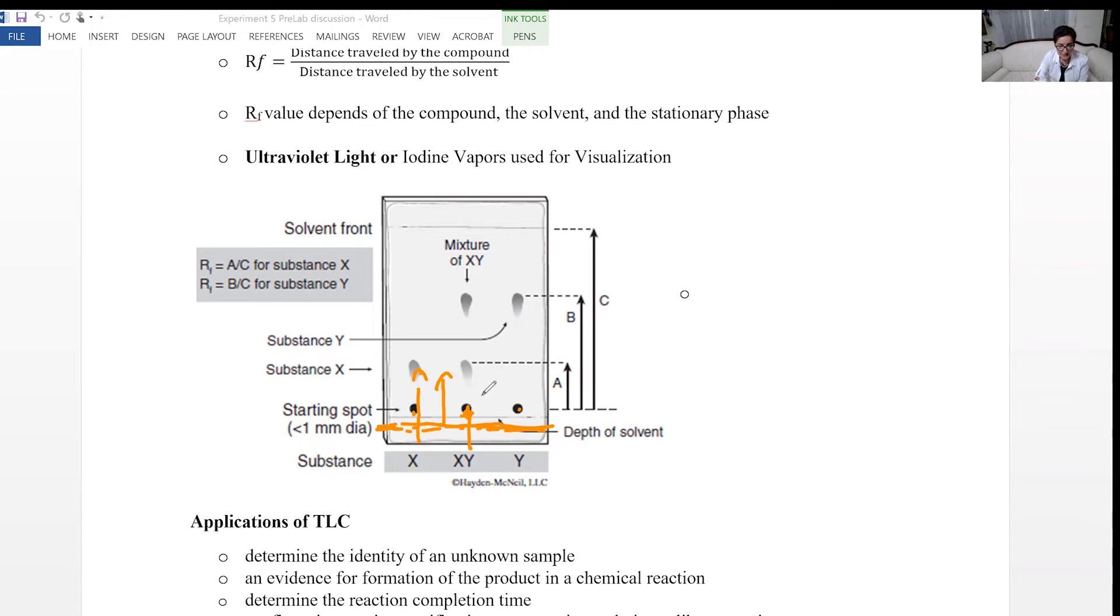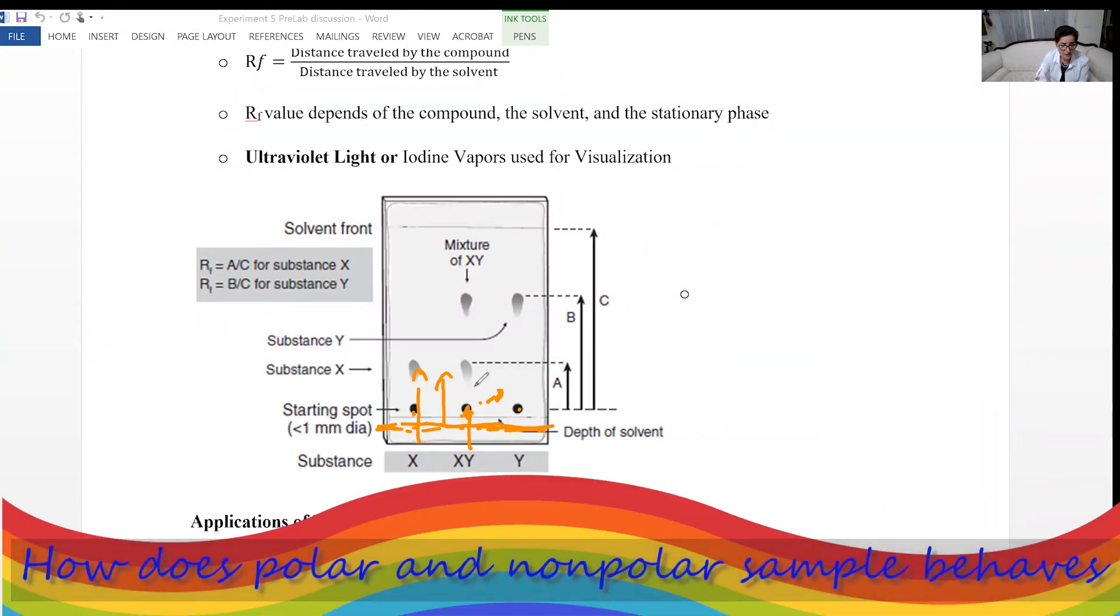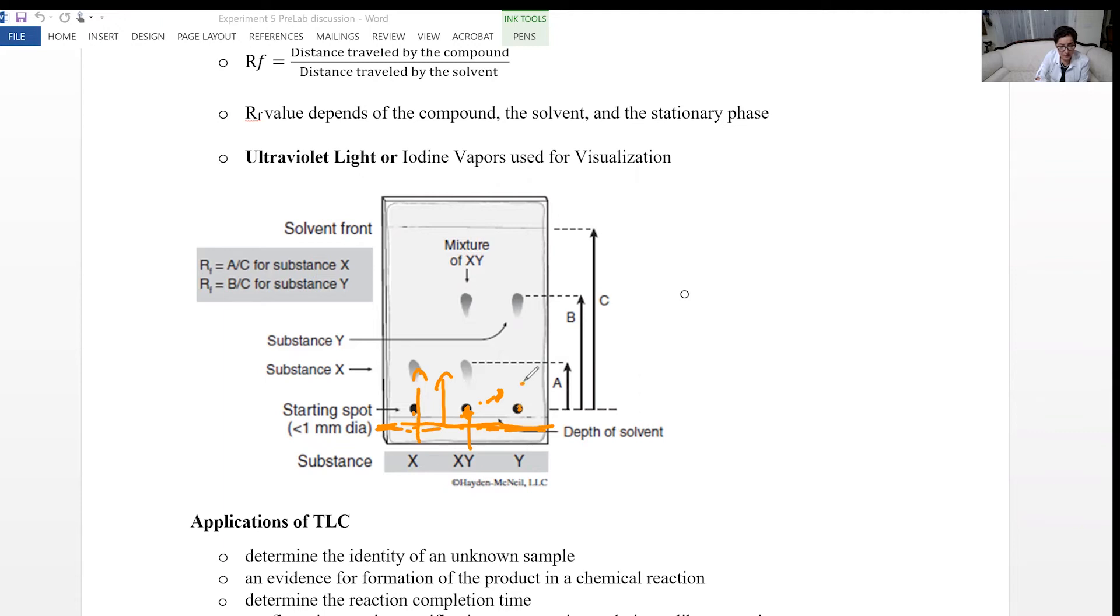Now, if the sample, if the plate is polar and the sample is polar, it's going to attach to the plate strongly, it's not going to move up. So it's going to move up very slow. If the sample is non-polar, but the plate is polar, the sample is going to move up faster.